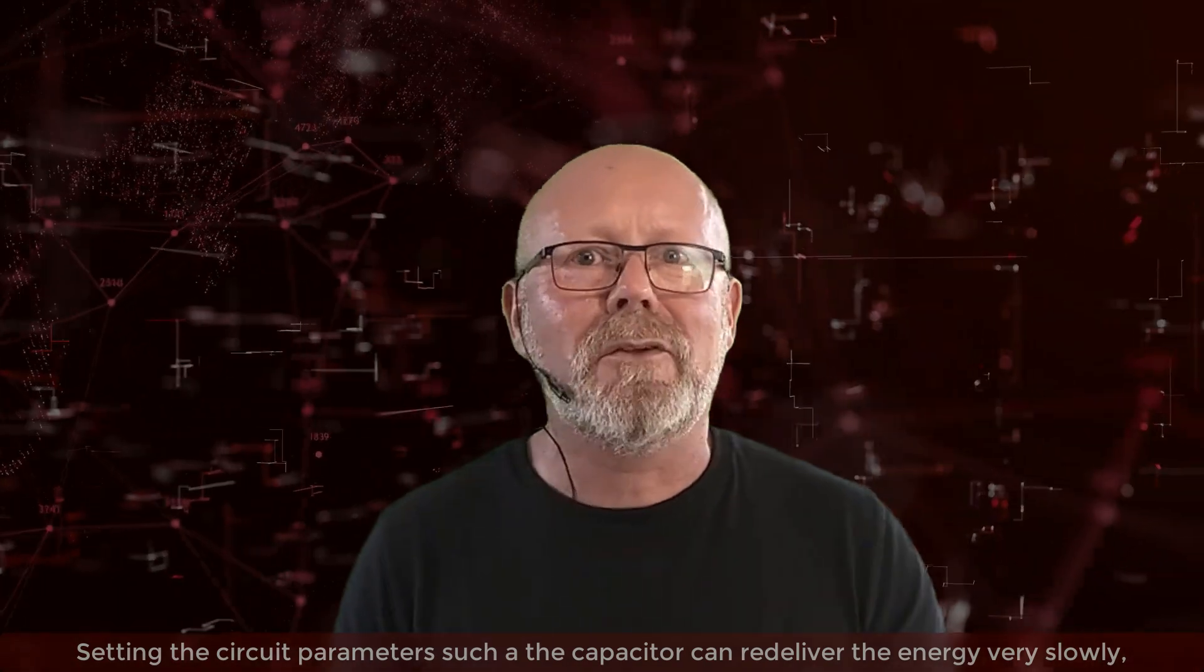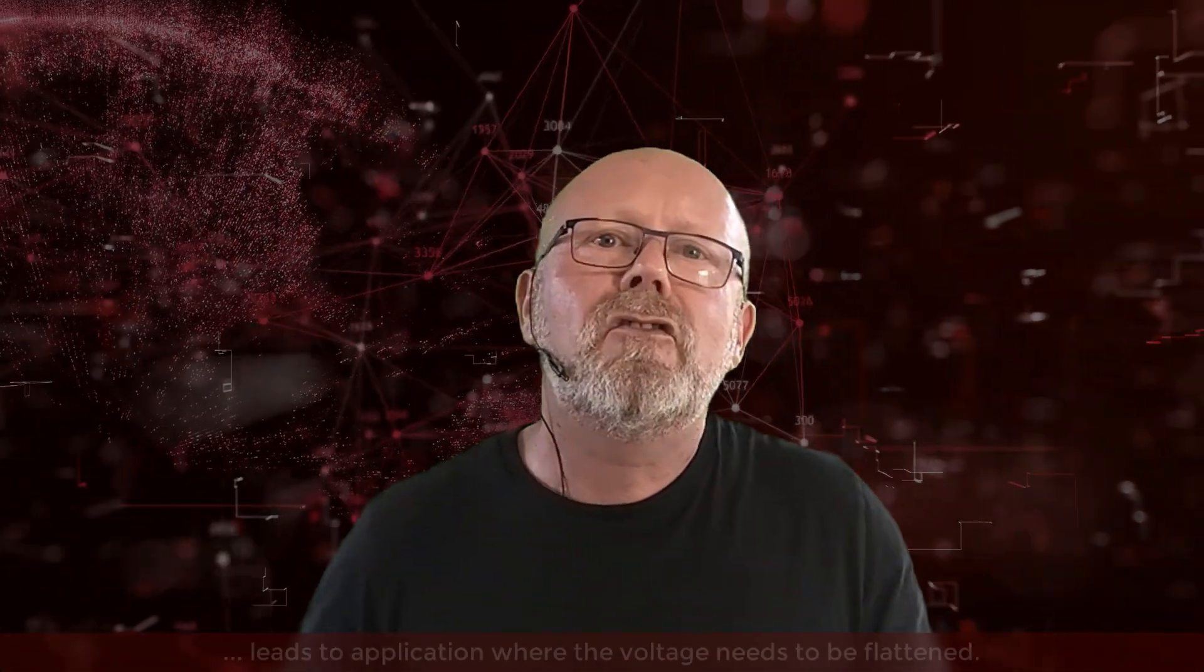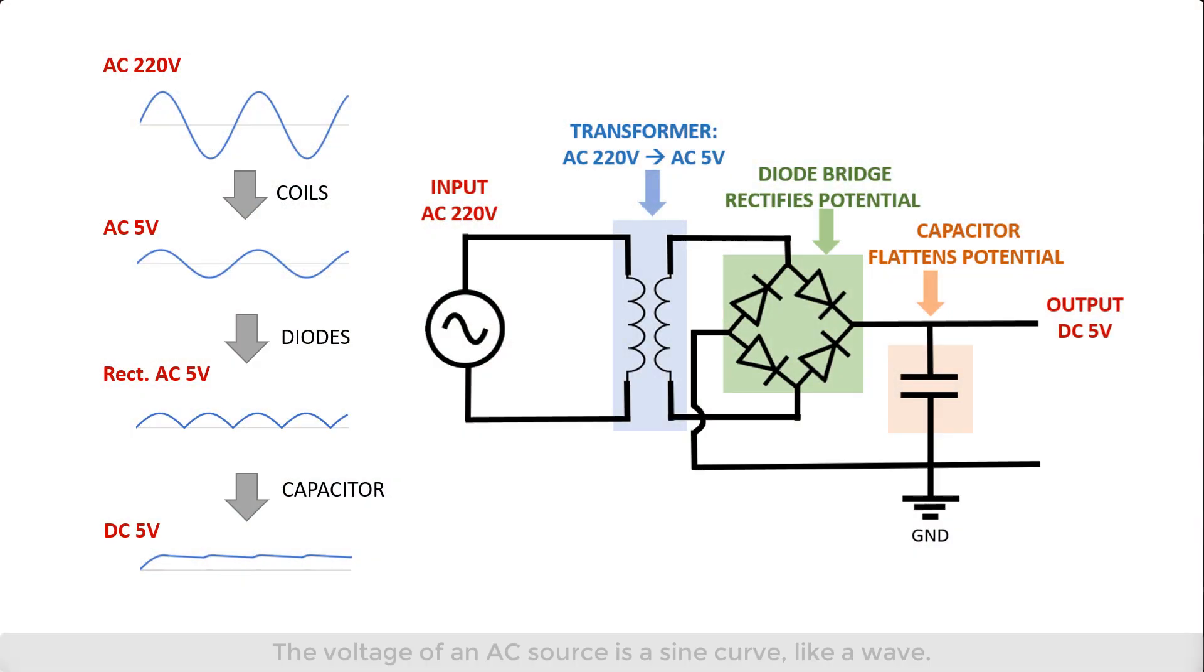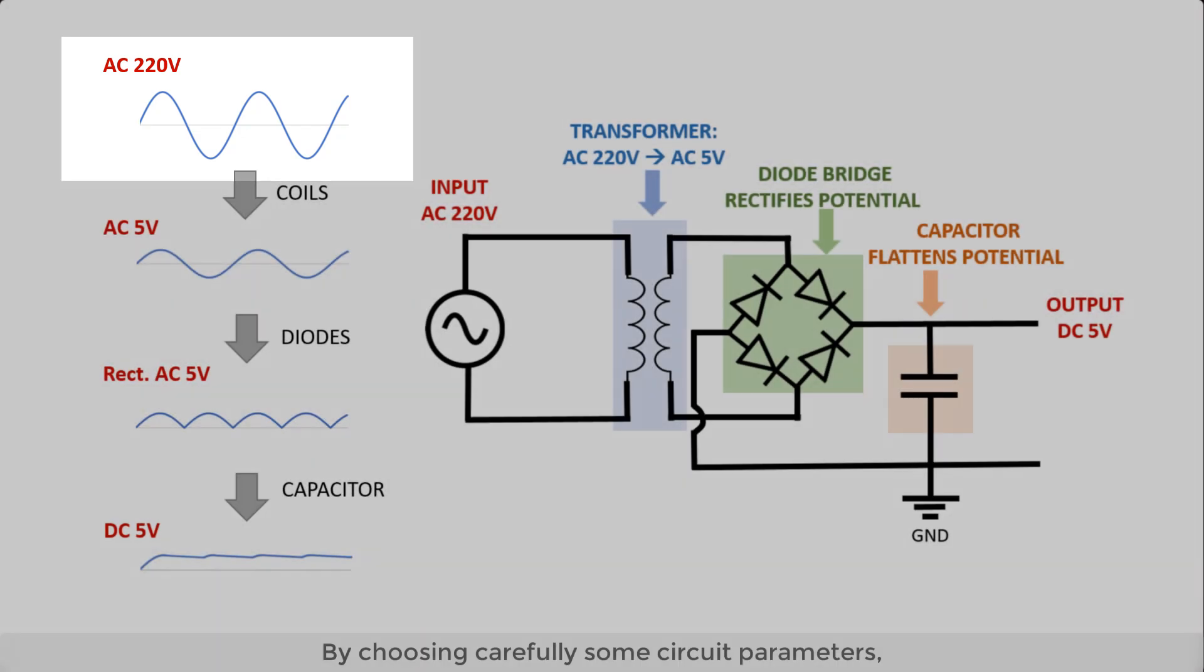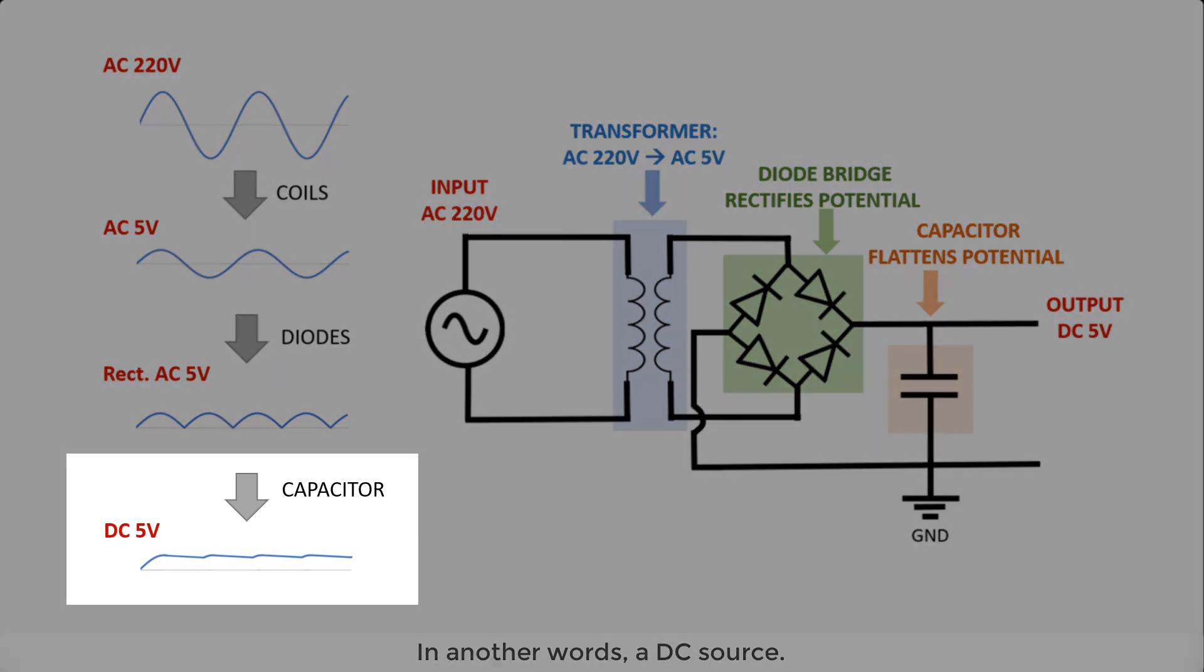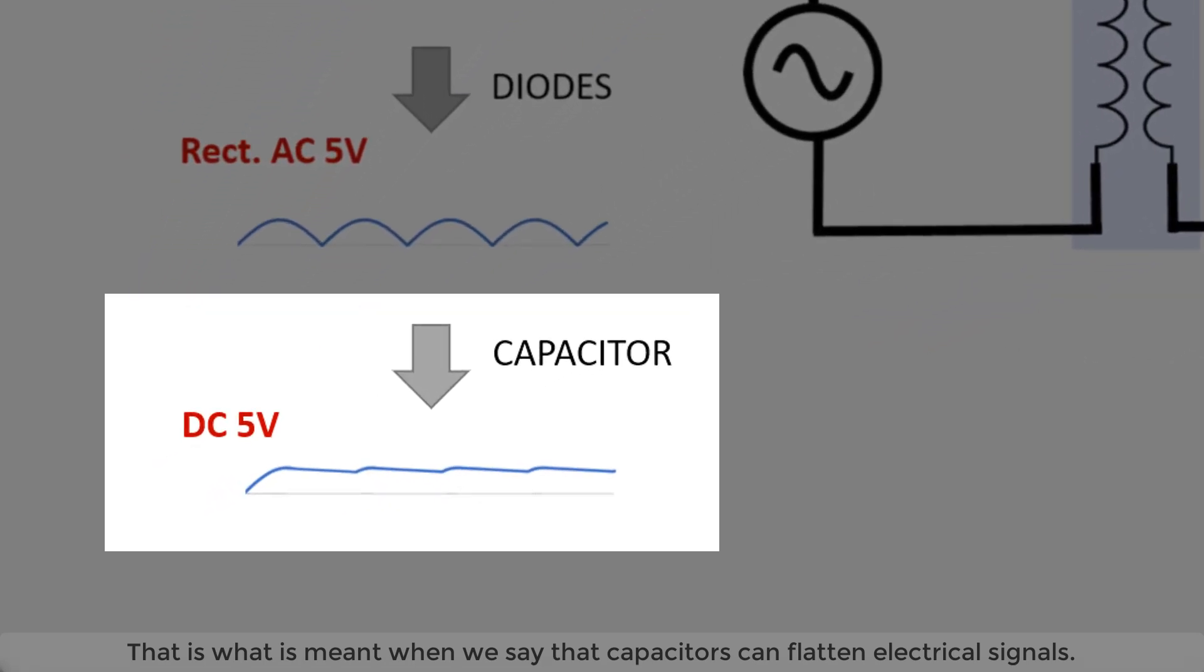Setting the circuit parameters such that the capacitor delivers the energy very slowly leads to applications where the voltage needs to be flattened. The voltage of an AC source is a sine curve, like a wave. By choosing carefully some circuit parameters, the output of the circuit containing a capacitor can become a constant voltage, in other words, a DC source. That is what is meant when we say that capacitors can flatten electrical signals.